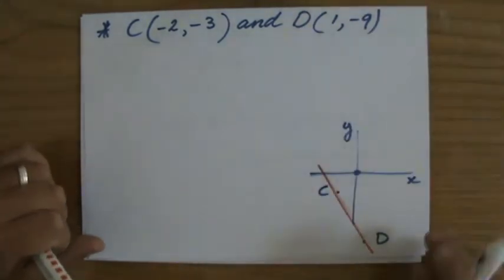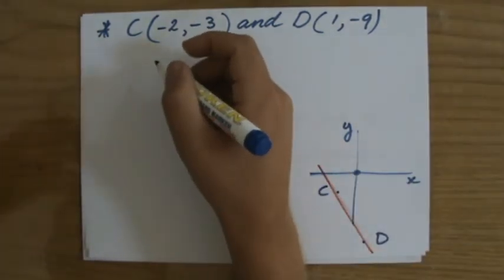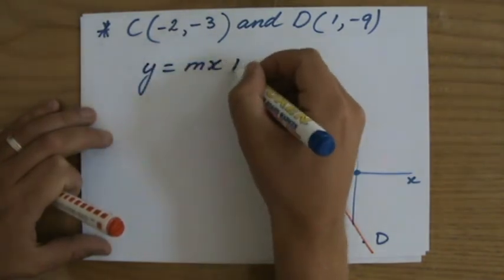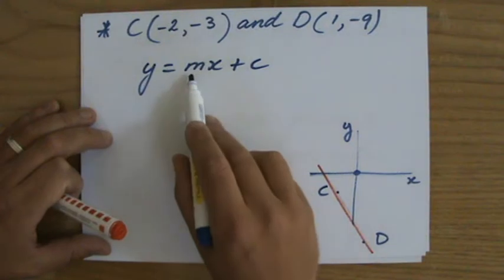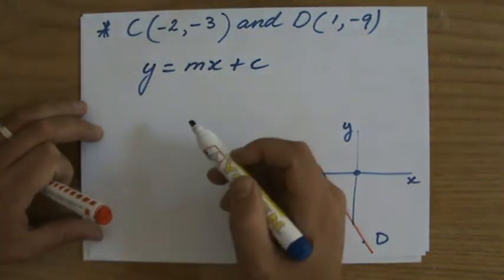I'm going a little bit quicker, like I said before. We write down the general equation, the gradient intercept form y = mx + c, where m is the gradient of your line and c is the y-intercept.